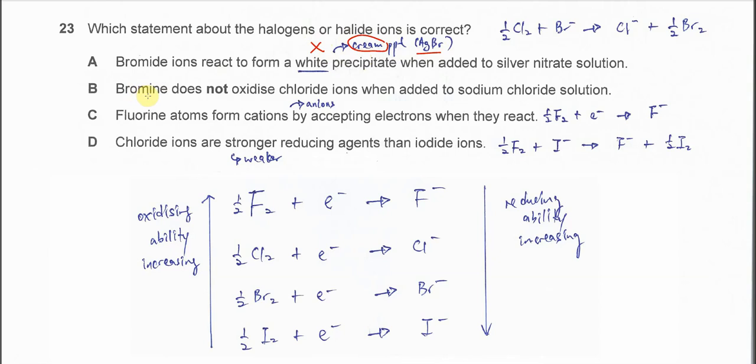B. Bromine does not oxidize chloride ions when added to sodium chloride solution. So this is chloride. Bromine is not able to oxidize chloride, but chlorine can oxidize bromide to form bromine. Because the oxidizing ability increases when it goes up the group, it means chlorine has a greater oxidizing ability compared to bromine. So it can oxidize bromide to form bromine.